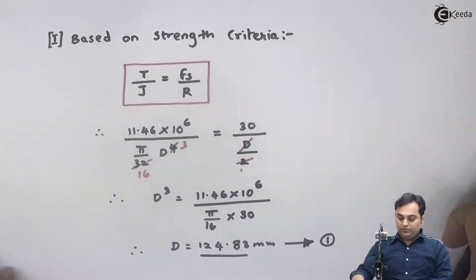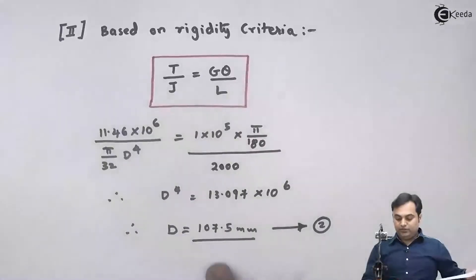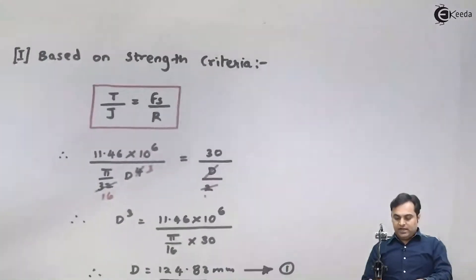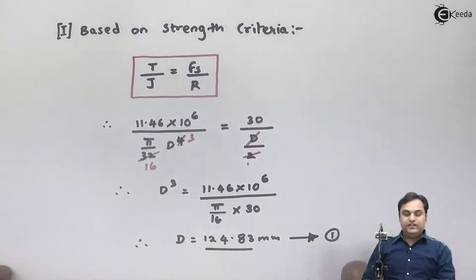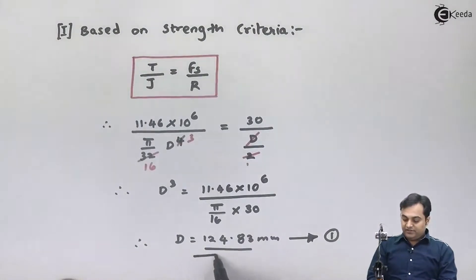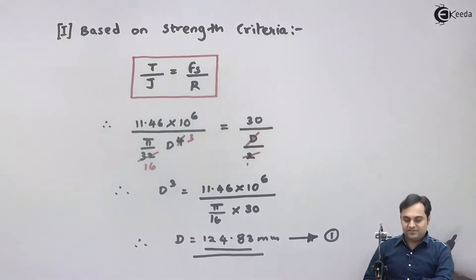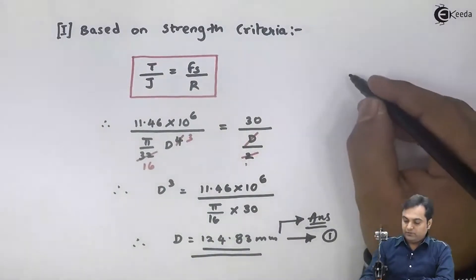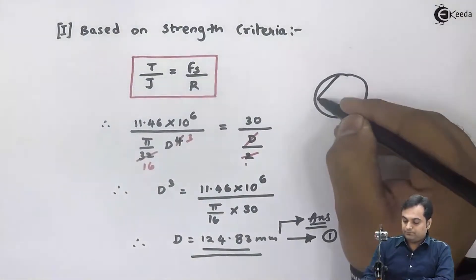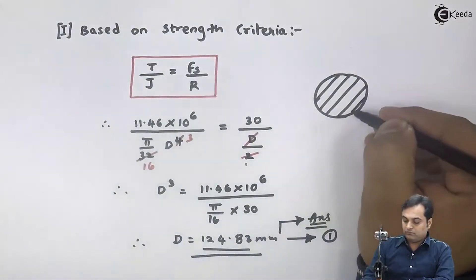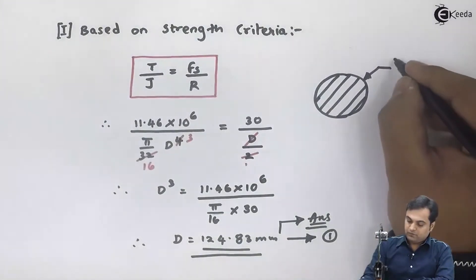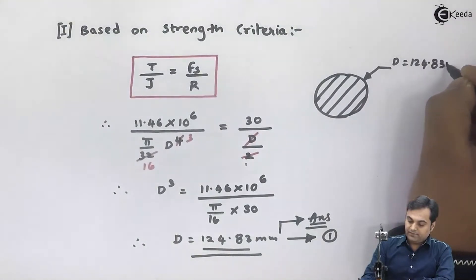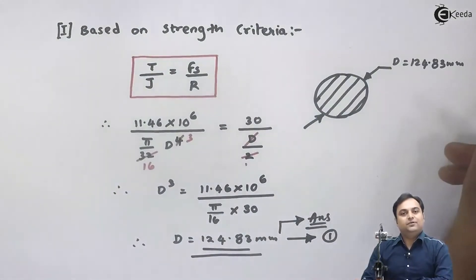Comparing equation one, where diameter is 124.83 mm, with equation two, where diameter is 107.5 mm, the diameter from the strength criteria is greater. We must select the greater diameter because a larger area causes the stress value to decrease. Therefore, 124.83 mm is the final answer for the diameter of the solid shaft.